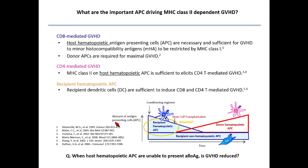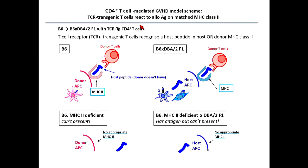In other words: when host hematopoietic APCs are unable to present antigen, is GvHD reduced? This is a very important question from a therapeutic point of view. What are the important APCs driving the MHC class 2-dependent GvHD? To ask this question, we used the Black6 into Black6 by DBA2F1 model with TCR transgenic CD4 T-cells.